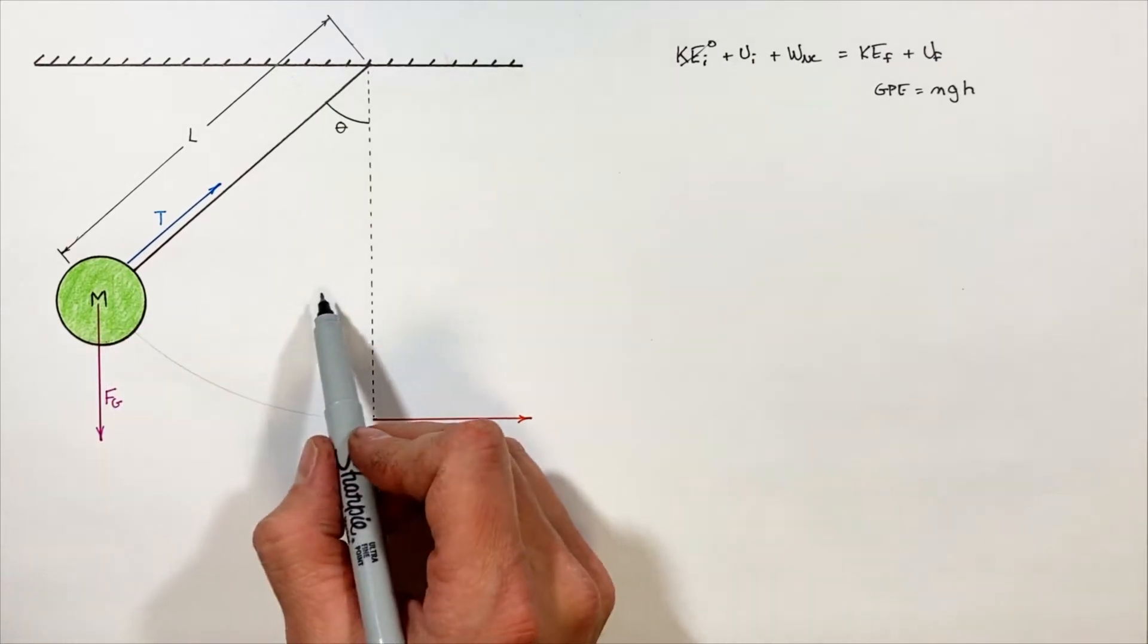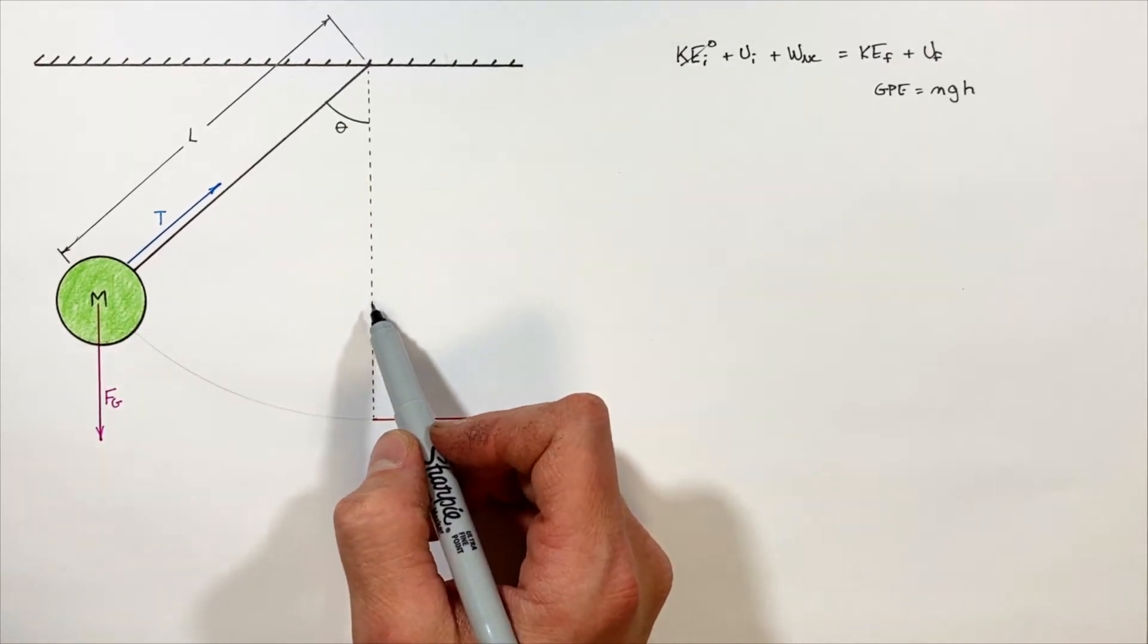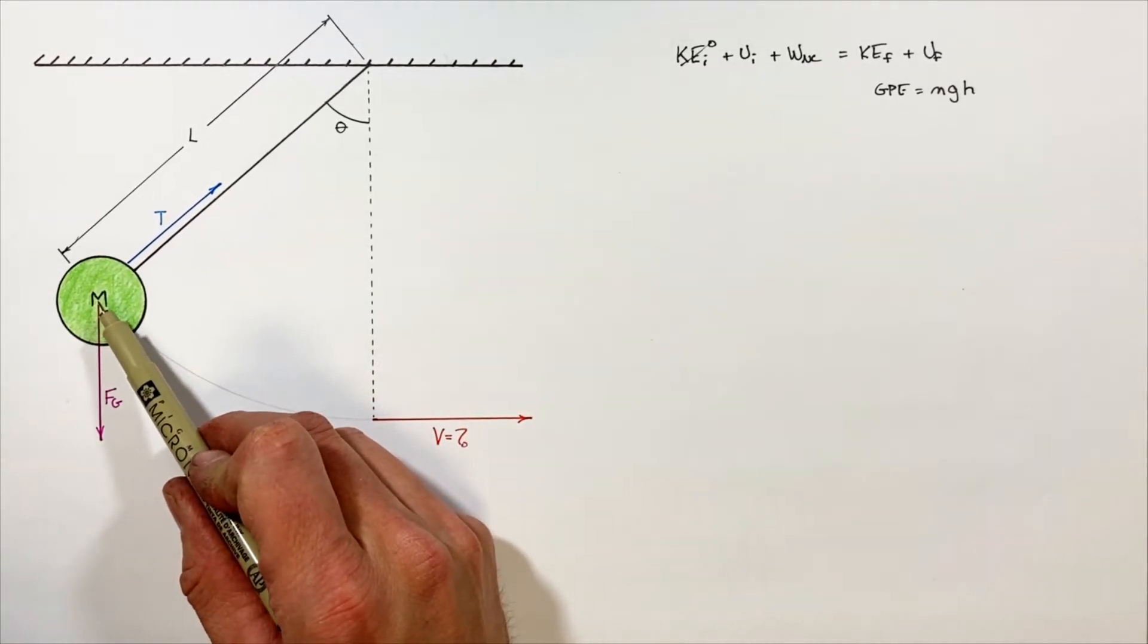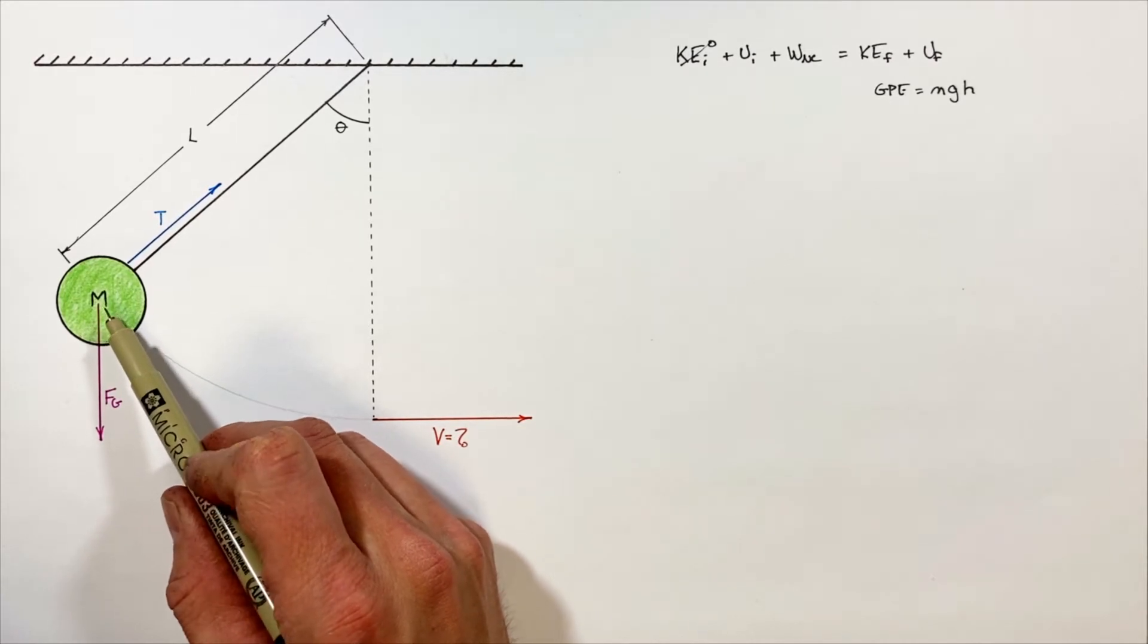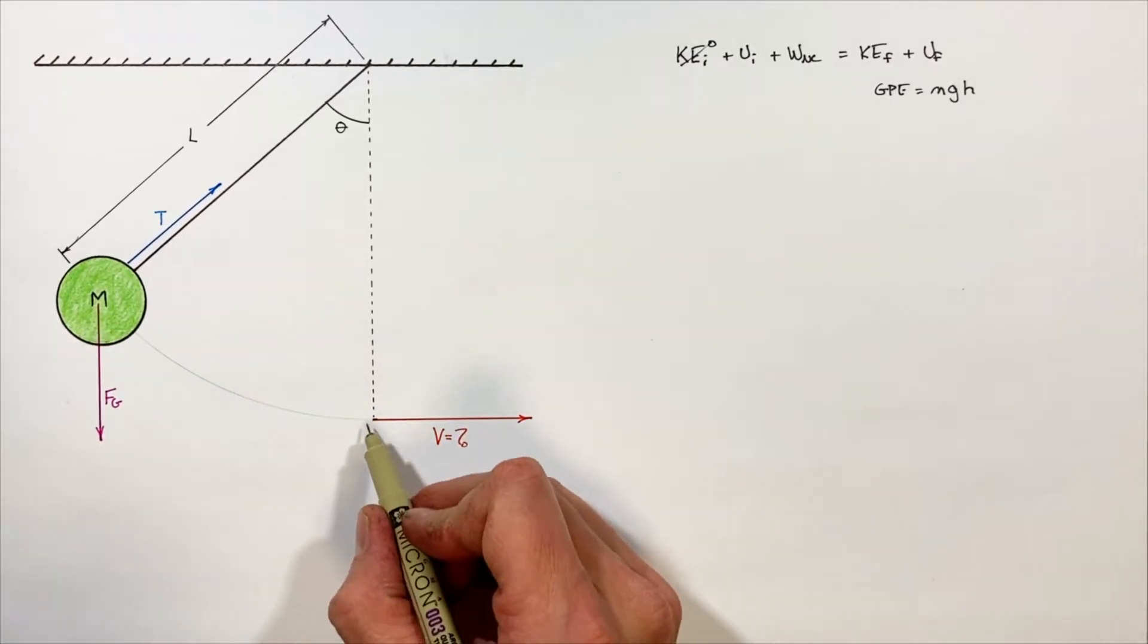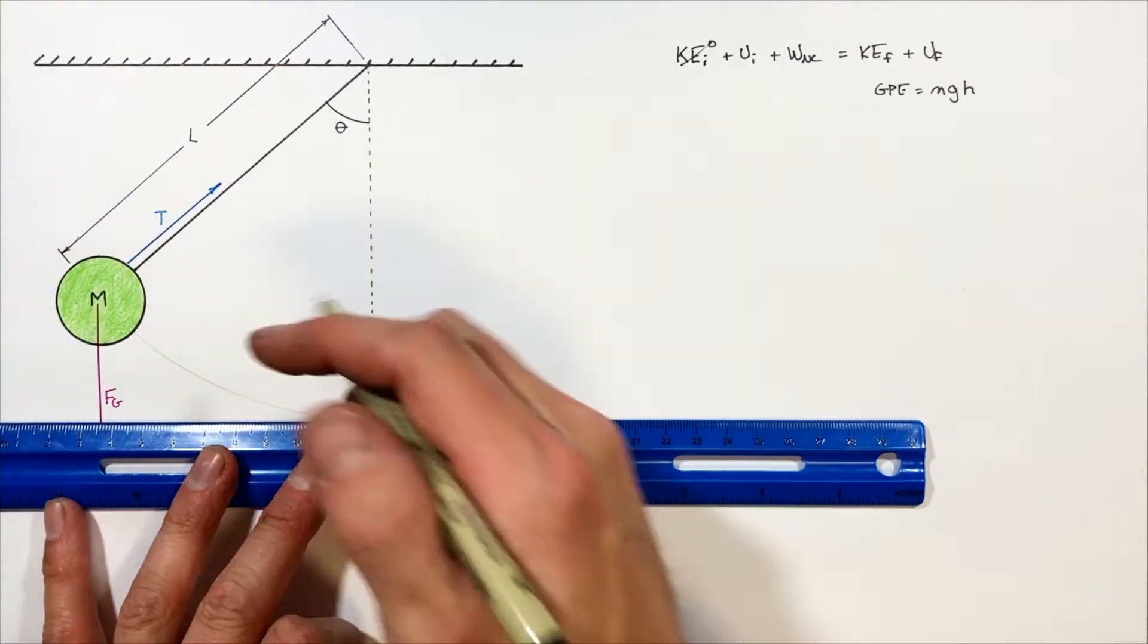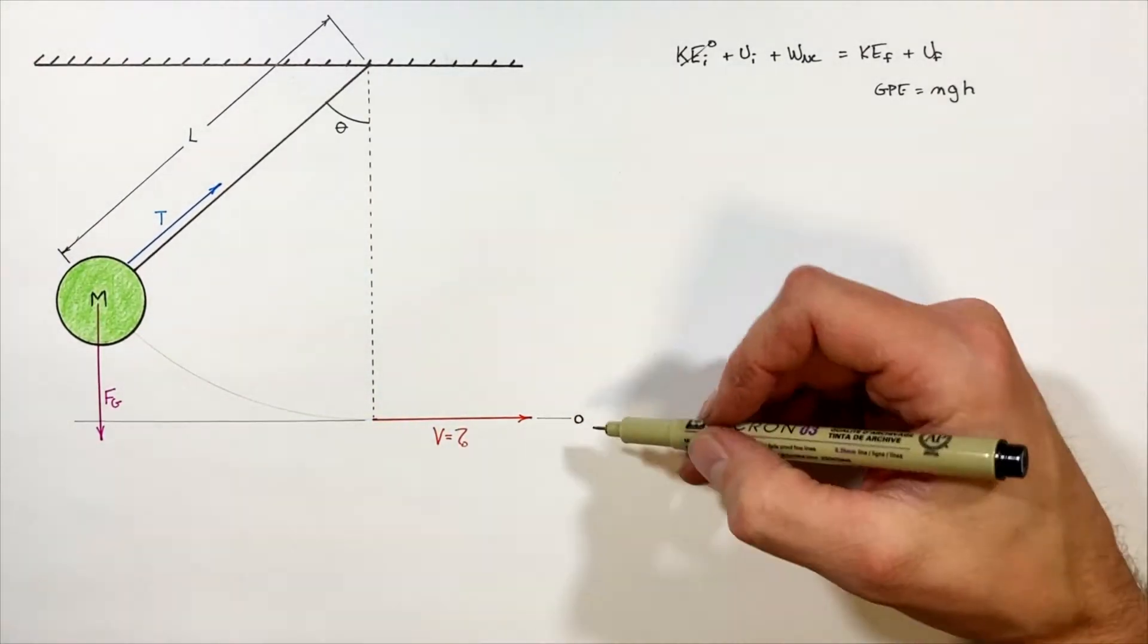We know the mass and the acceleration due to gravity, but finding H, the height of this mass in this problem, can be a little bit problematic. In order to figure out how high this mass is, we need to have some reference height, or what we're going to call a height of zero.